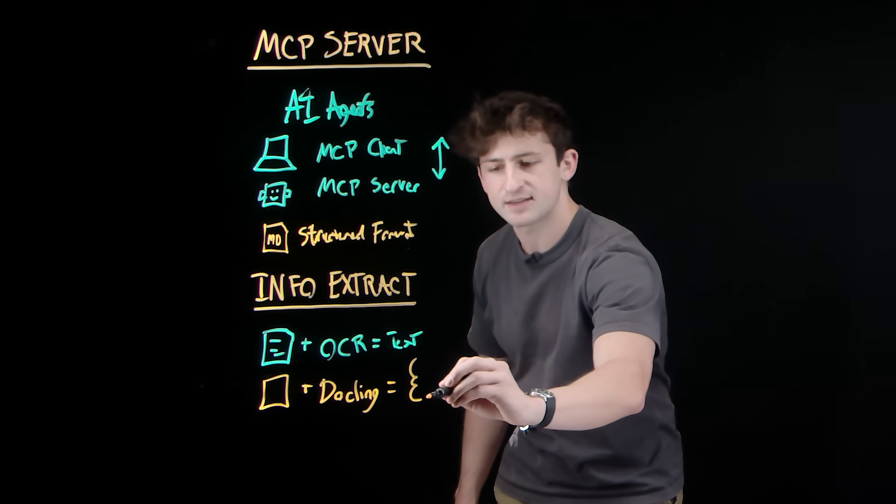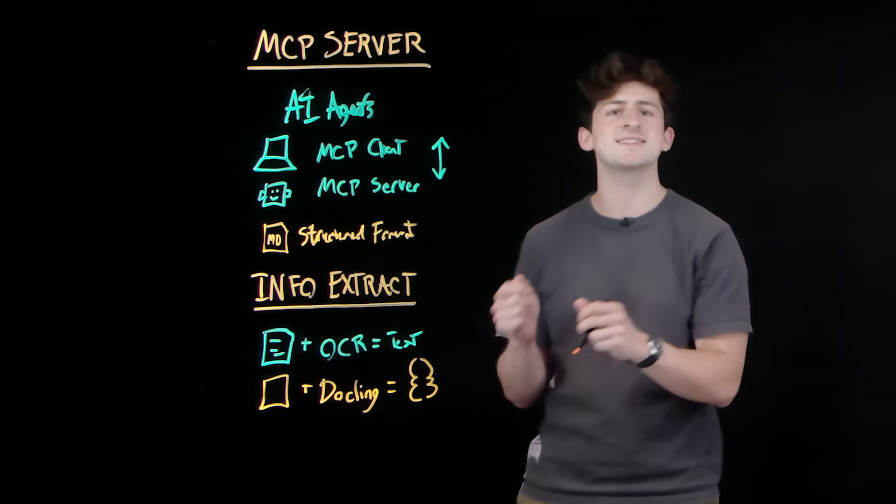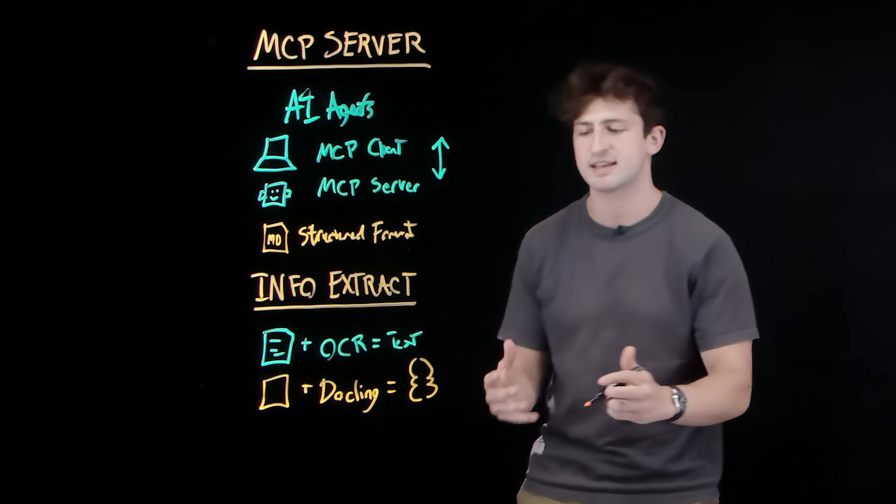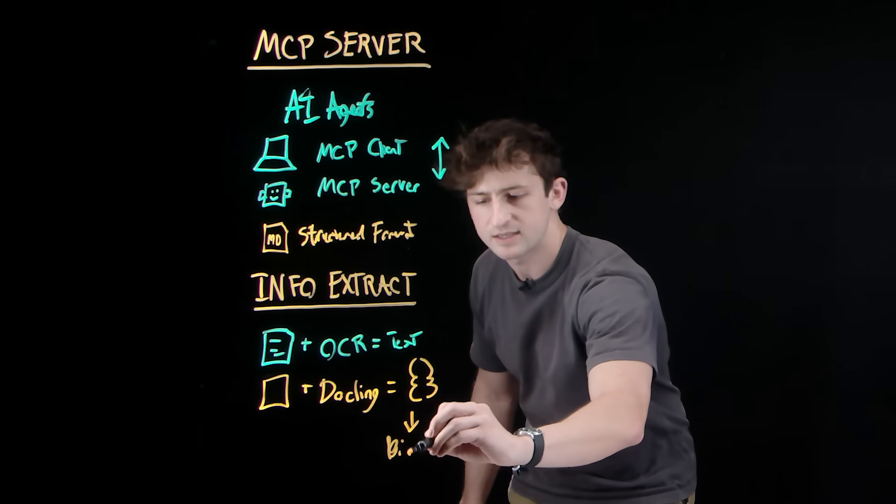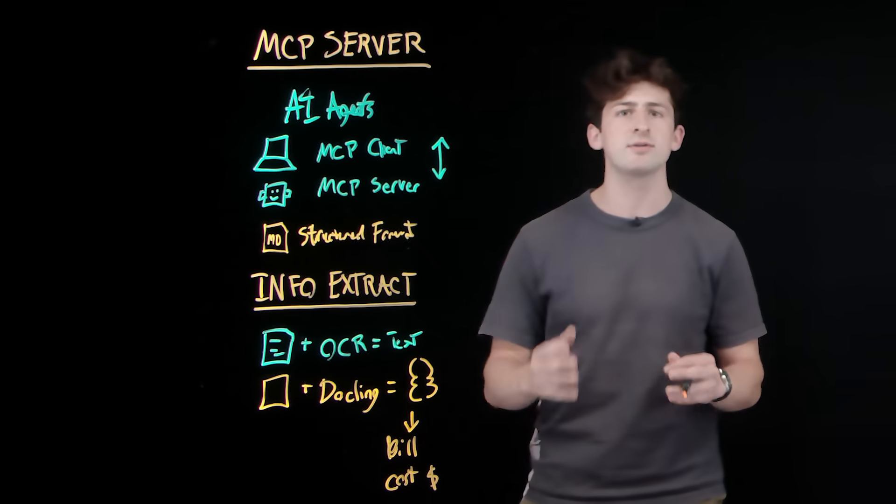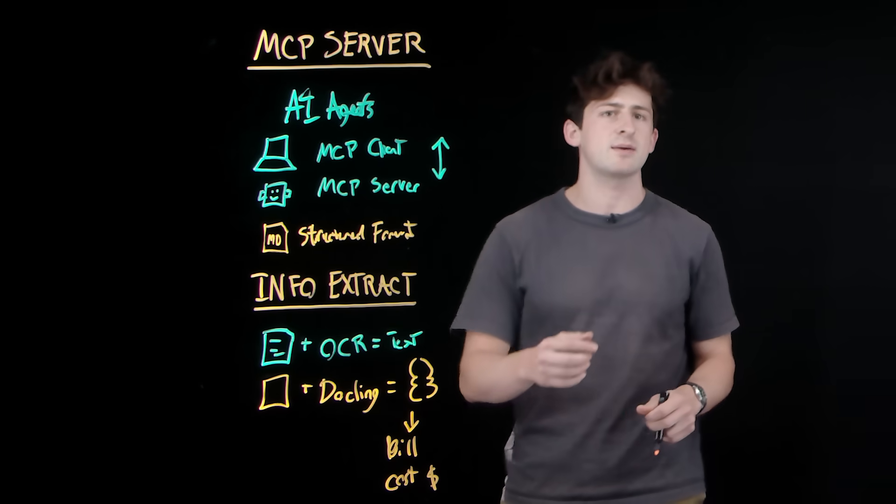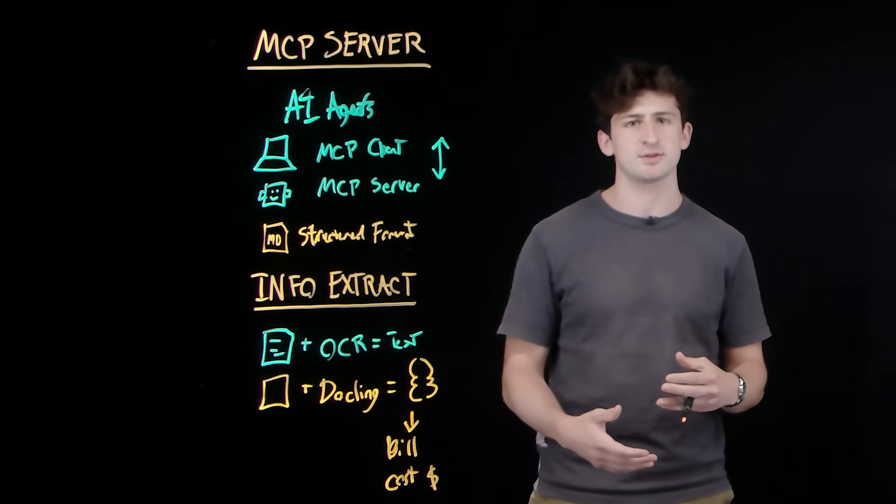So specifically with the information extraction feature of Dockling, we can define exactly what we want to extract. Say, for example, in this scenario, it is the number of the bill or perhaps the cost of the price of the invoice. All things that are very important to be able to extract from a document, but typically with unstructured data can be hard to parse through.